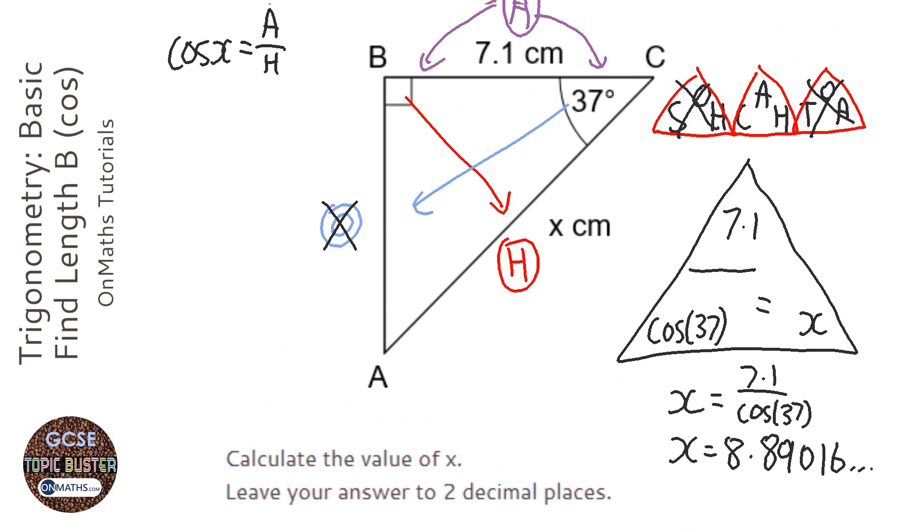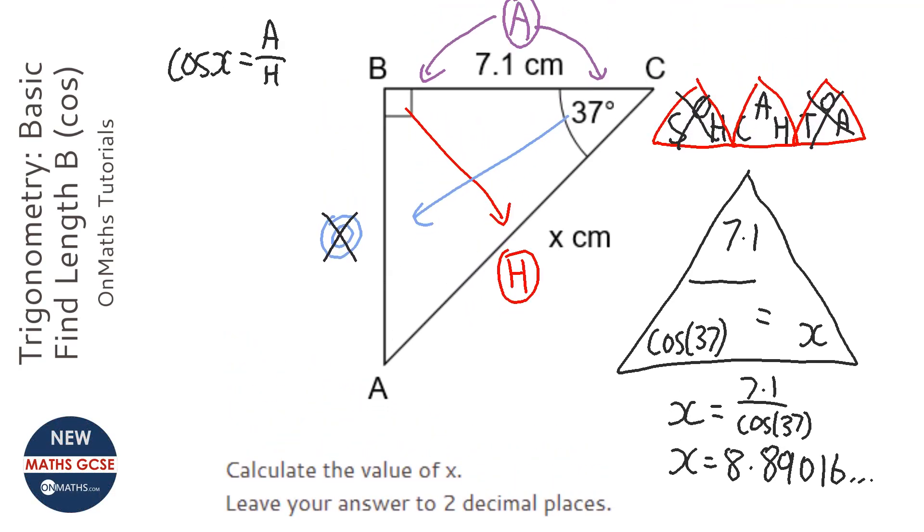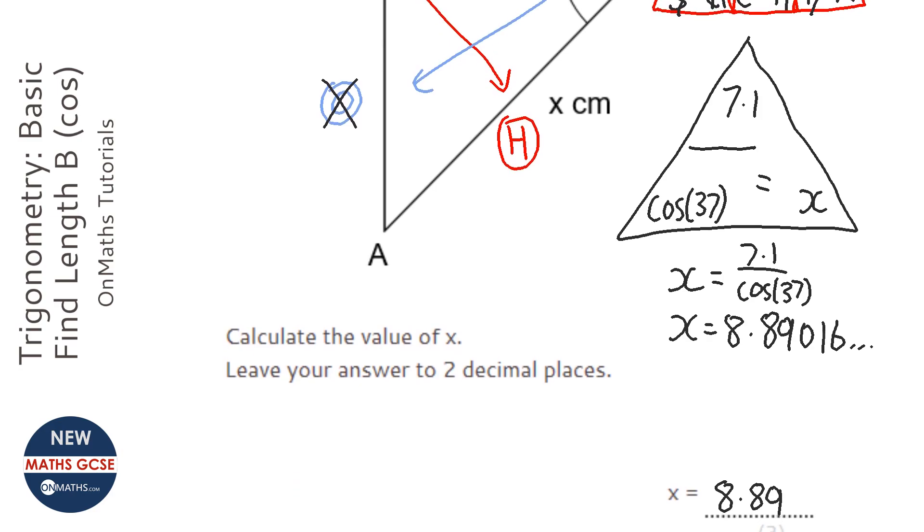Last step is just to check it makes sense. The hypotenuse has to be the longest side. Well, 8.89 is longer than 7.1, so it's probably correct.